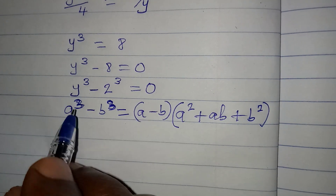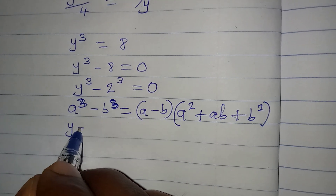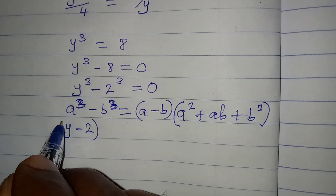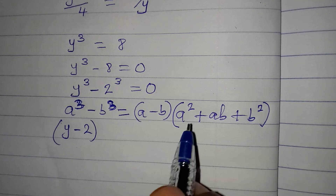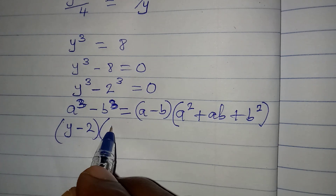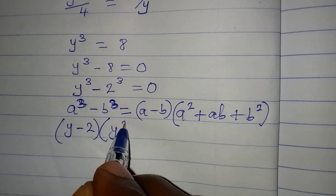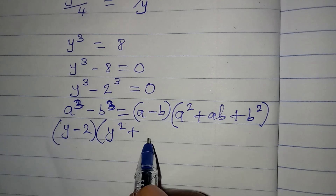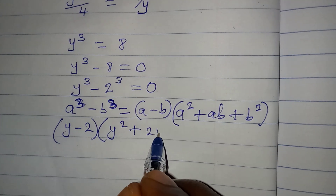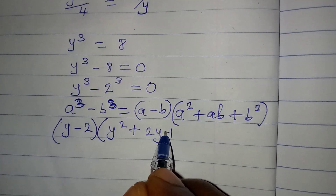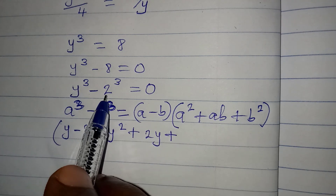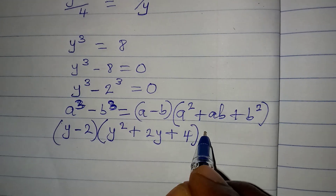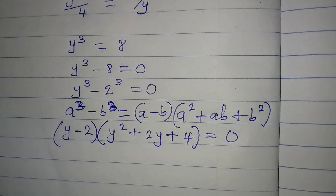Applying this to our problem: in place of (a minus b) we have (y minus 2), then a squared becomes y squared, ab becomes y times 2 which is 2y, and b squared becomes 2 squared which is 4. This equals 0.